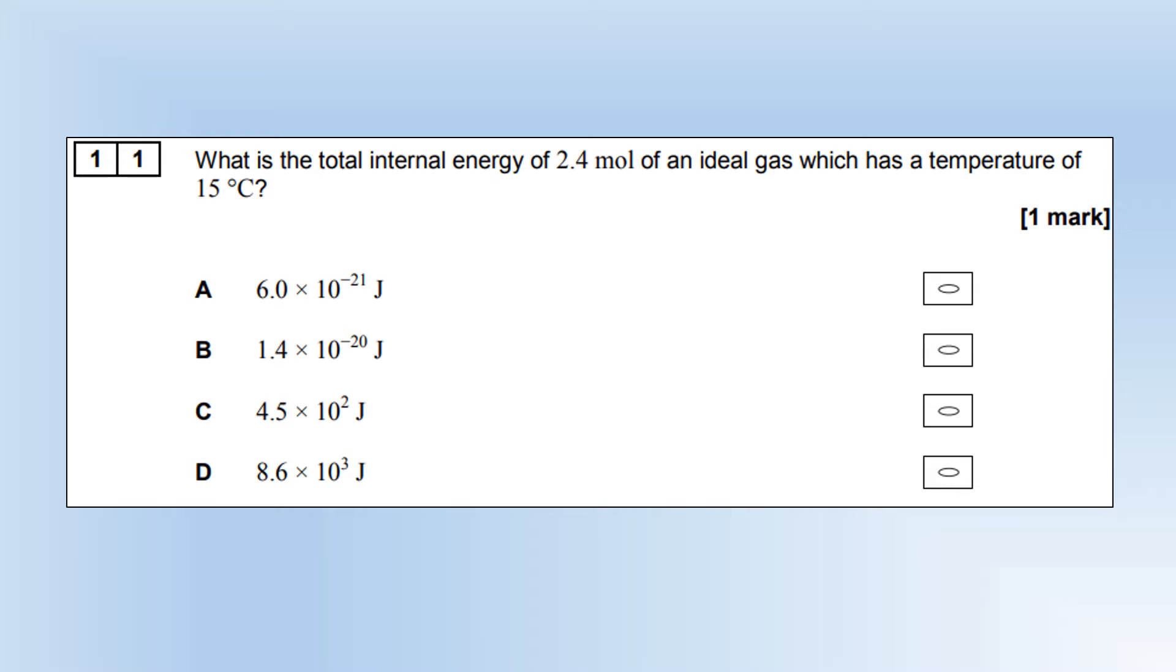What is the total internal energy of 2.4 moles of an ideal gas, which has a temperature of 15 degrees centigrade? We're going to be using this equation here. We could use 3 over 2 NKT if we wanted to, but it's easier to do it this way. We know the number of moles, we know the molar gas constant, we can calculate the temperature in Kelvin, giving us the internal energy option D.